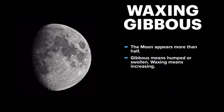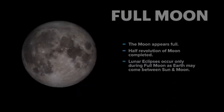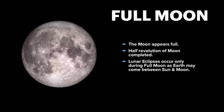Moving on from the first quarter, when the moon grows a little more beyond half, it is called waxing gibbous. The moon appears more than half from earth. Gibbous means humped or swollen, and waxing means increasing — that's why this moon is called the waxing gibbous.